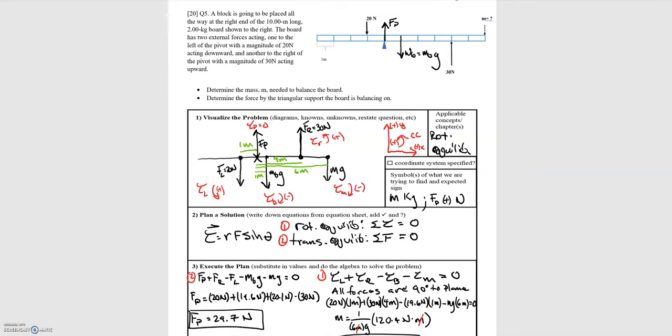So now coming up on the last two problems, question five. This should look pretty familiar from the note packet. This is very similar to the last problem in the note packet where we have a pivot point that's away from the center of mass of the board.